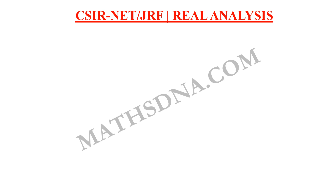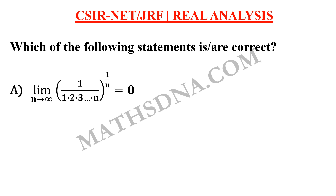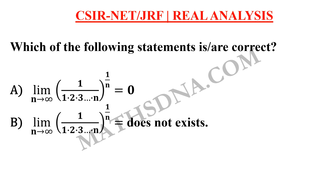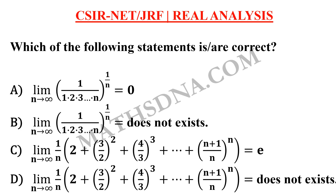Moving on to the question. The question is: which of the following statements is or are correct? Option A: limit n tends to infinity of (1/1 · 2 · 3 · ... · n)^(1/n) equals 0. Option B: the same limit does not exist. Option C: limit n tends to infinity of (1/n) · [(2) + (3/2)^2 + (4/3)^3 + ... + ((n+1)/n)^n] equals e. Option D: the same limit does not exist.